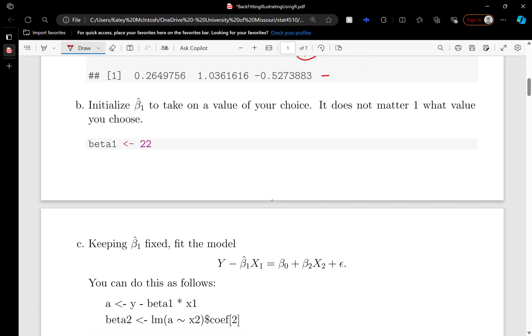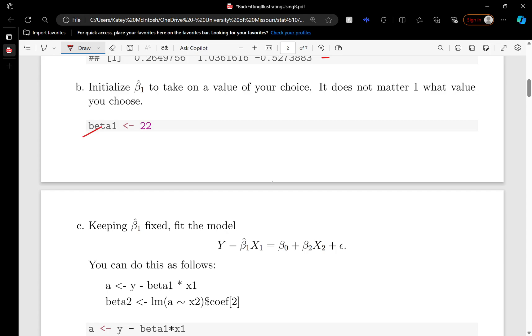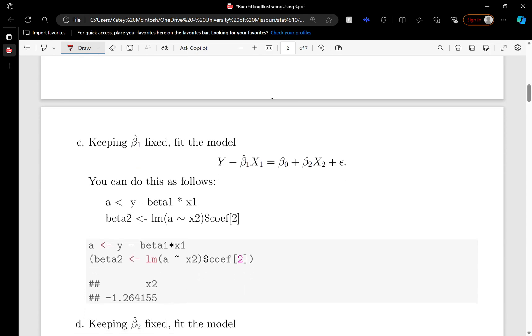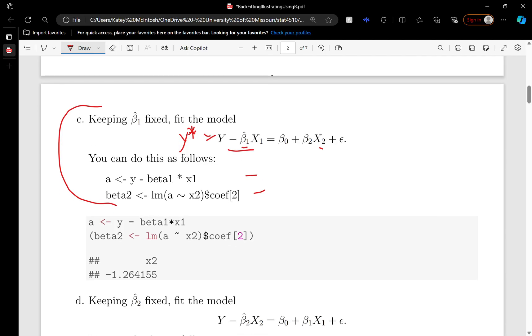We first come up with an estimate, and then that becomes a constant, so we subtract it to this side—this is our new Y in a sense. We're regressing Y onto X2. This is copied straight from the book—these are the two lines of code they recommend. We enter them, and this is our new estimate for beta 2.